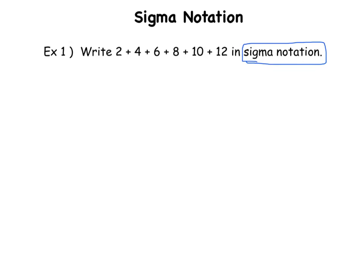Sigma notation involves this symbol, which is a Greek S. In math, when you see that, you want to think of the word sum. The way sigma notation works is: if I wanted to write 2 plus 4 plus 6 plus 8 plus 10 plus 12 in sigma notation, I'm going to get that symbol down and there are a few spots where I need to put some other ideas.